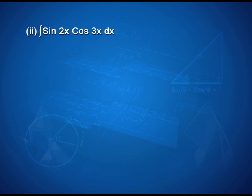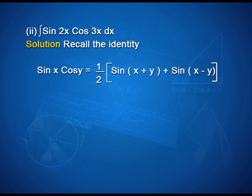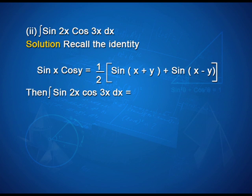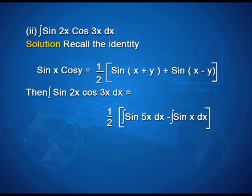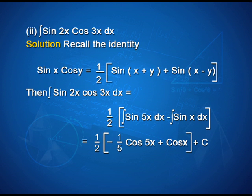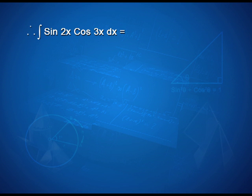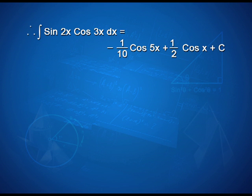Another example: to integrate sin(2x)·cos(3x)dx, recall the identity sin(x+y) + sin(x−y) = 2sin(x)cos(y), giving sin(x)cos(y) = (1/2)[sin(x+y) + sin(x−y)]. Then, ∫sin(2x)·cos(3x)dx = (1/2)∫[sin(5x) − sin(x)]dx = (1/2)[−(1/5)cos(5x) + cos(x)] + c. Therefore, ∫sin(2x)cos(3x)dx = −(1/10)cos(5x) + (1/2)cos(x) + c.